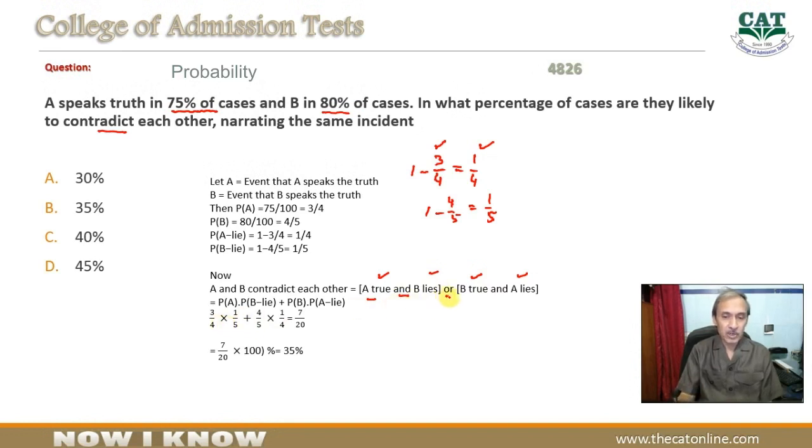Aur phir 'or' hai toh ye add ho jayengi. Sorry, ye multiply hai, ye add hai. Toh ye add ho jayengi. Aur B true hai toh iski probability aagi 4 by 5 aur A lies 1 by 4. Toh aapne inko solve kiya toh ye aata hai 7 by 20.